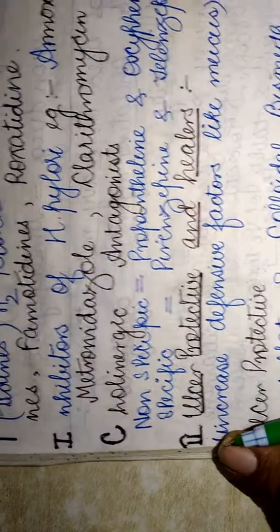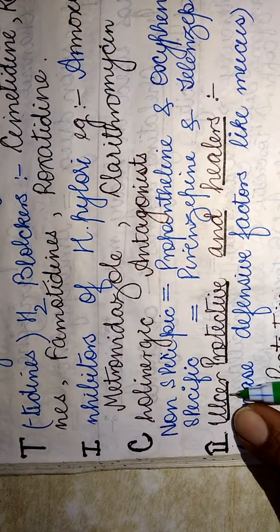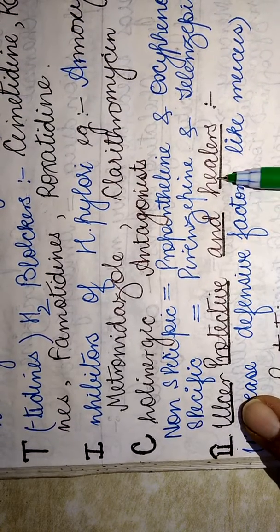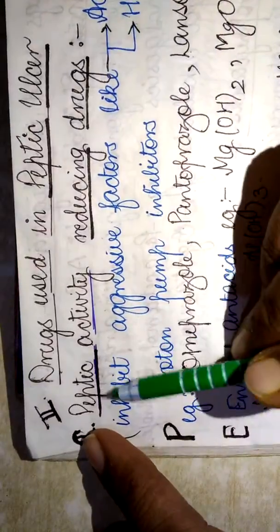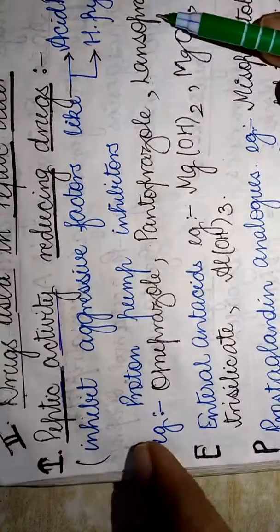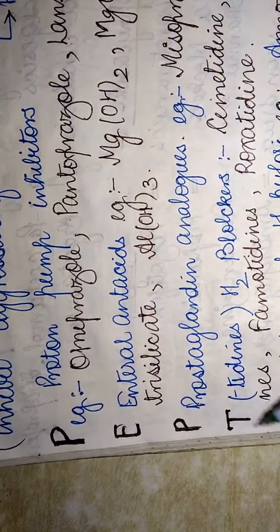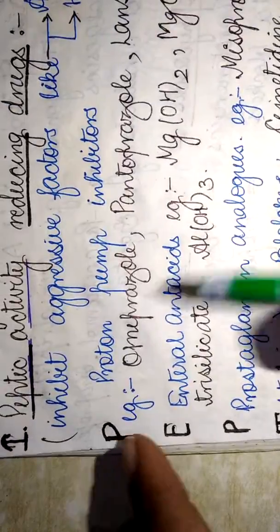The next category includes drugs which can be used as ulcer protective and ulcer healers. Within these two categories, the first category which comprises peptic activity reducing drugs, I have made a mnemonic in the form of PEPTIC.